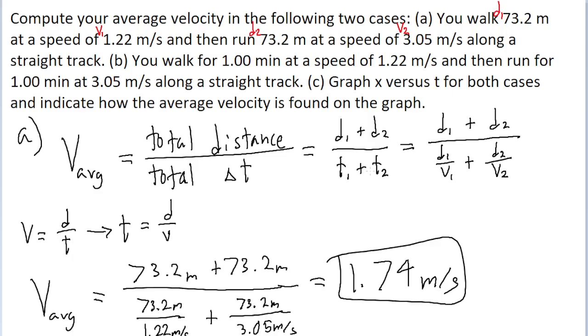Part b asks us to find the average velocity for a case where we walk for 1 minute at a speed of 1.22 meters per second, then we run for 1 minute at 3.05 meters per second. So the key difference between part a and part b is that while in part a we were given the speeds and distances, in part b we're given the times and speeds for each of the two phases of the scenario. So we can say that this first 1 minute is t sub 1, and this first speed is v sub 1, and the second 1 minute is t sub 2, and the second speed is v sub 2.